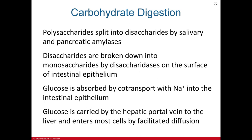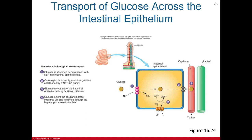Monosaccharides like glucose are absorbed by co-transport with sodium into the intestinal epithelium, then carried by the hepatic portal vein to the liver and enter cells by facilitated diffusion. Glucose is key to producing ATP (energy) in the cell's mitochondria.